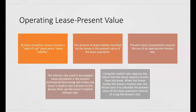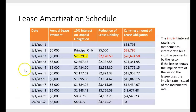The lessee's incremental borrowing rate is the same rate the lessee would be charged if they went out and bought this asset and financed it through a bank. That rate might be 13% on the exam, but then they'll tell you the lessor's implicit rate is 12%. When the lessee knows the lessor's implicit rate, the lessee uses that rate instead. The lessor's implicit rate is built into the lease amortization schedule.